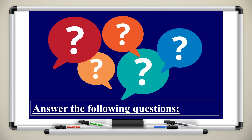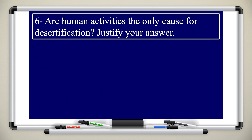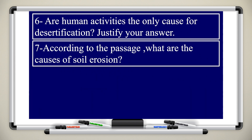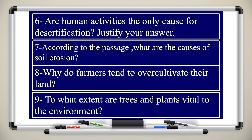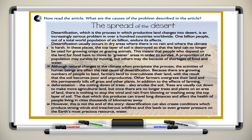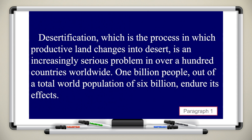After the multiple choice questions, you have the productive questions. This means they need full, meaningful sentences. Question six: are human activities the only cause for desertification? Justify your answer. Question seven: according to the passage, what are the causes of soil erosion? Question eight: why do farmers tend to over-cultivate their land? And question nine: to what extent are trees and plants vital — meaning important — to the environment? You will find the article in your student's book, Unit 4. Let's read the article together, and then go back to answering the questions.